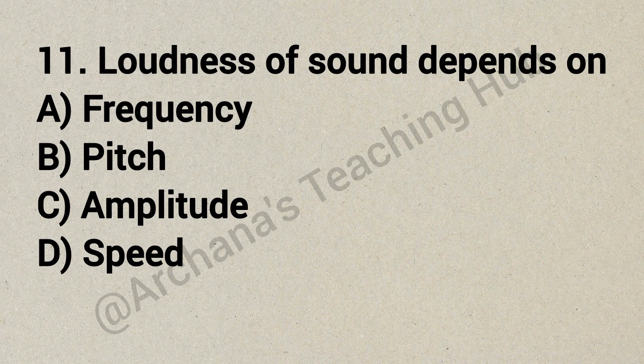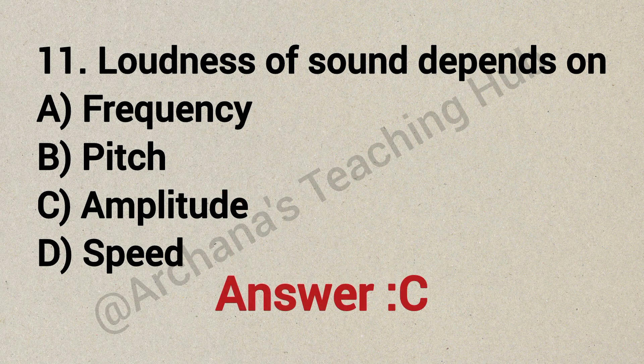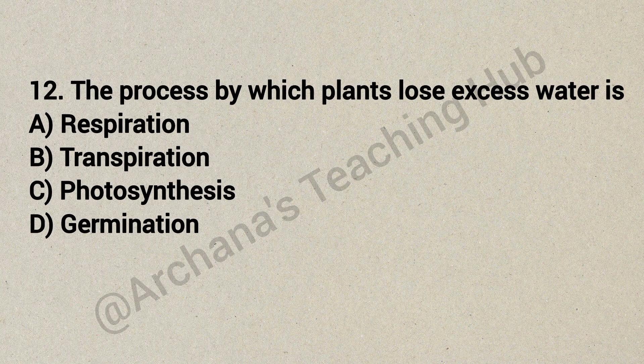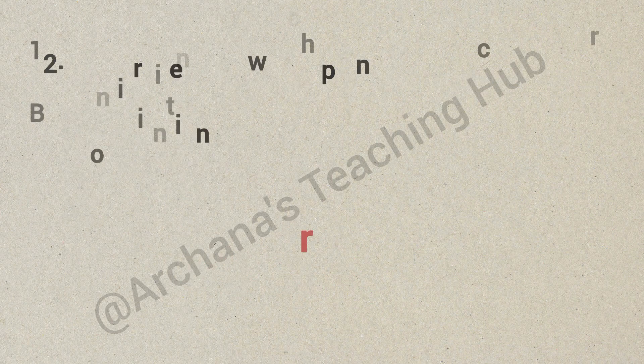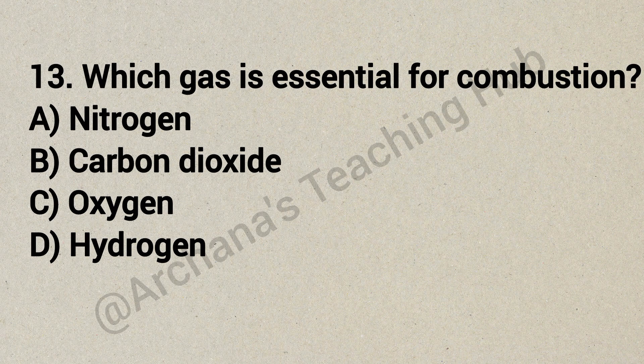Question 11: Loudness of sound depends on — Option A: frequency, Option B: pitch, Option C: amplitude, Option D: speed. Correct answer is Option C: amplitude. Question 12: The process by which plants lose excess water is — Option A: respiration, Option B: transpiration, Option C: photosynthesis, Option D: germination. Correct answer is Option B: transpiration.